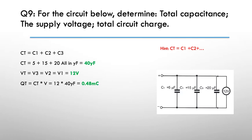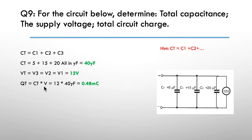Answer: add up the three values — 15, 5, and 20 — giving 40 microfarads total. Since the capacitors are in parallel, voltage total equals the voltage across each one. If the voltage across C3 is 12 volts, it has to be the supply voltage. The total charge is capacitance total multiplied by voltage total: 12 volts times 40 microfarads gives 0.48 millicoulomb.